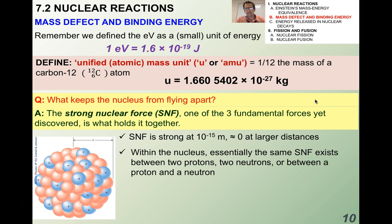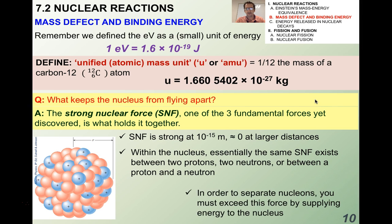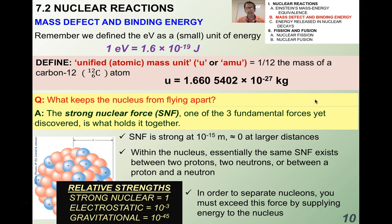The strong nuclear force is essentially zero at larger distances. Within the nucleus, essentially the same strong nuclear force exists between two protons, two neutrons, or between a proton and a neutron. In order to separate the nucleons, you have to exceed this force by supplying energy to the nucleus. The strong nuclear force is very, very strong and acts over a very, very short distance.